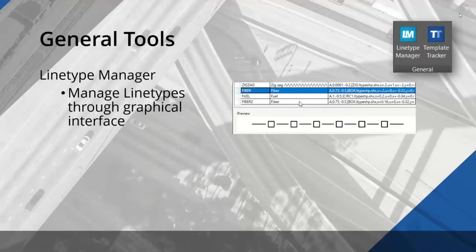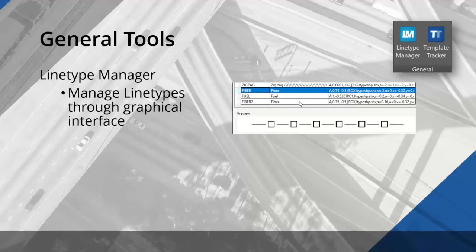One general tool is called Line Type Manager — it's a base AutoCAD tool that allows you to manage line types through a graphical interface. You're probably used to using a .lin file where you have to understand a kind of programming language with odd syntax to define, manage, and create line types. But you don't have to do that anymore. With Line Type Manager you load a line type file right into the manager and it gives you live previews like you see on the screen.